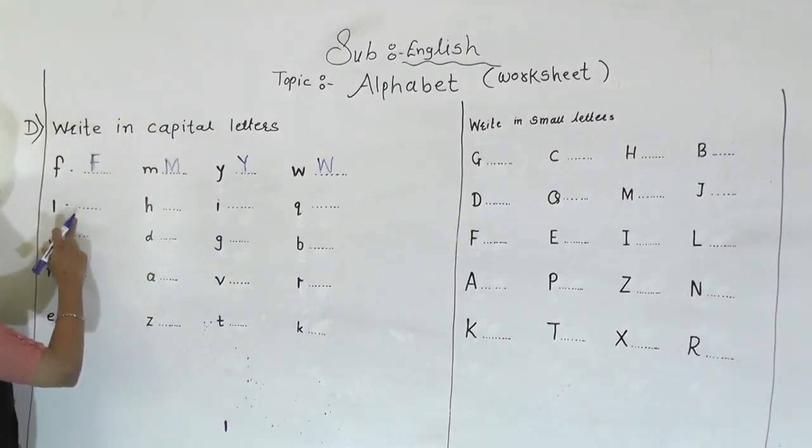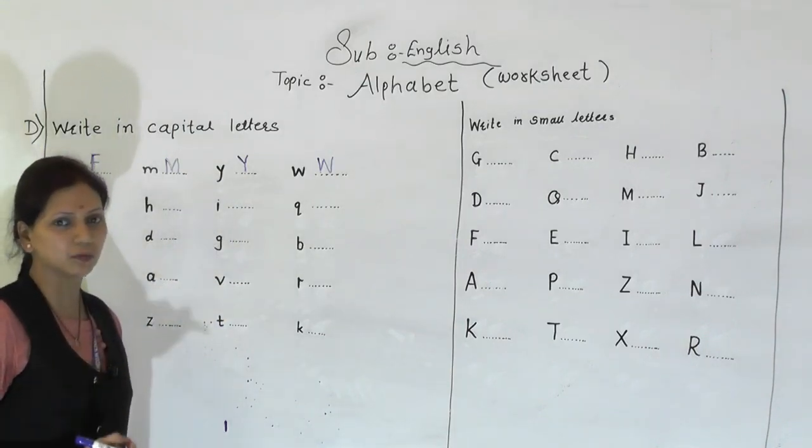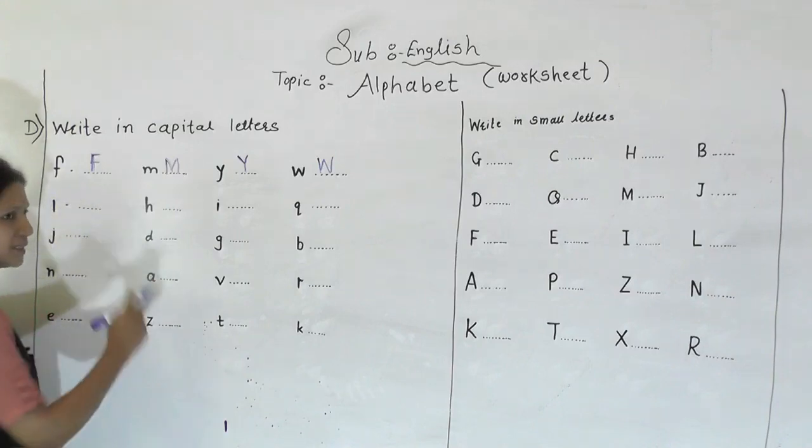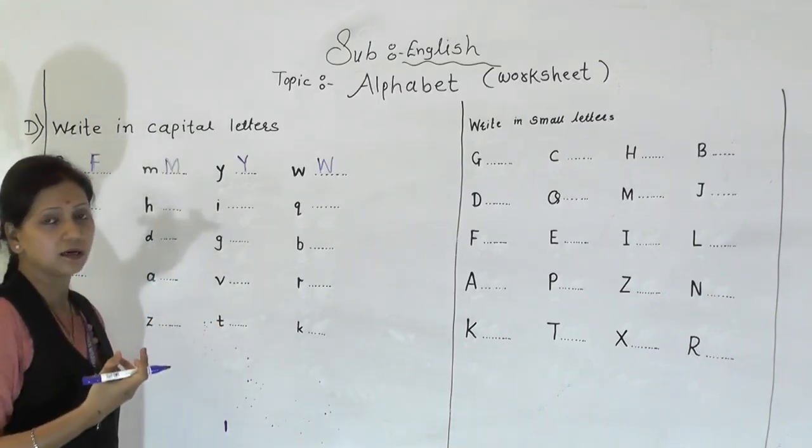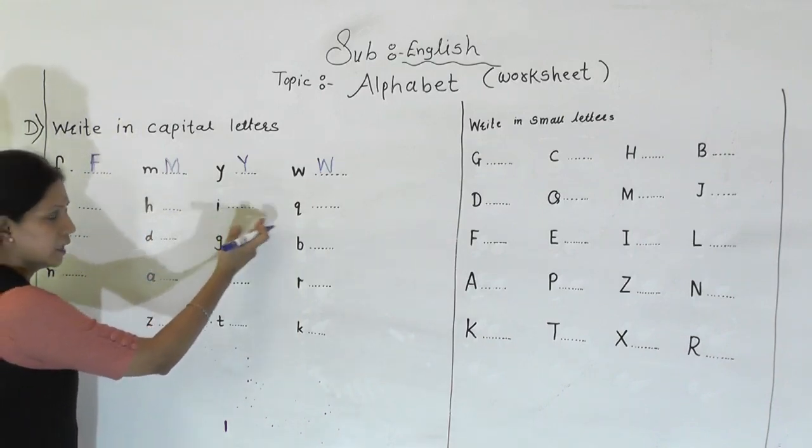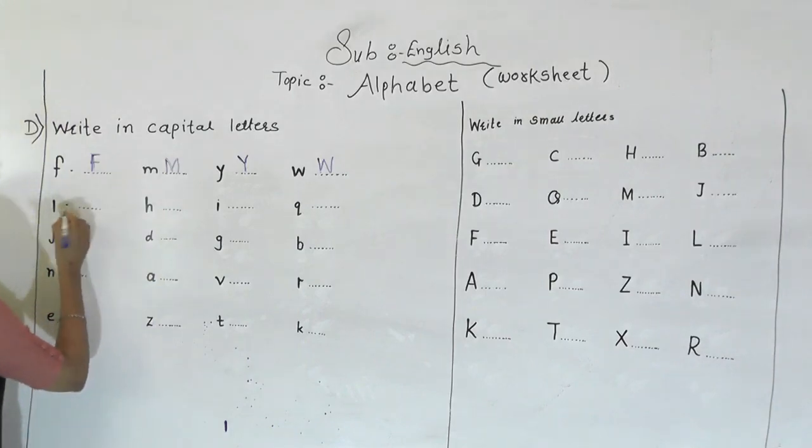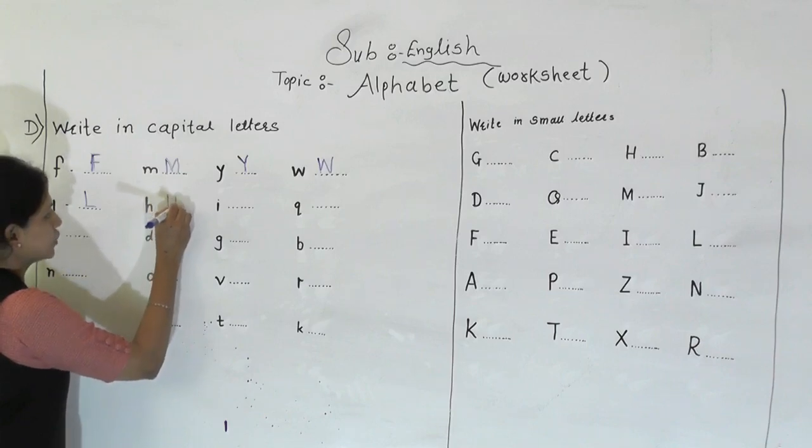While pronouncing each and every letter, you have to use a phonic sound, okay. So don't say L, L, Q. Pronounce in a phonic sound. So how to write capital L? Capital L. Now H, capital H.